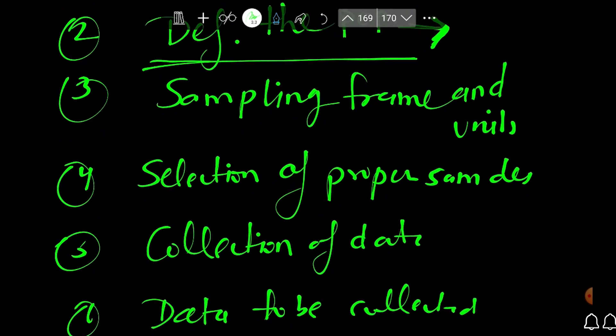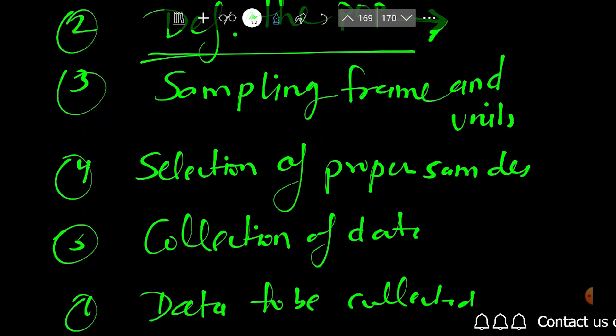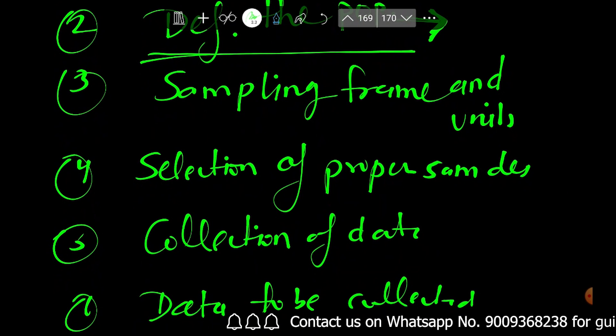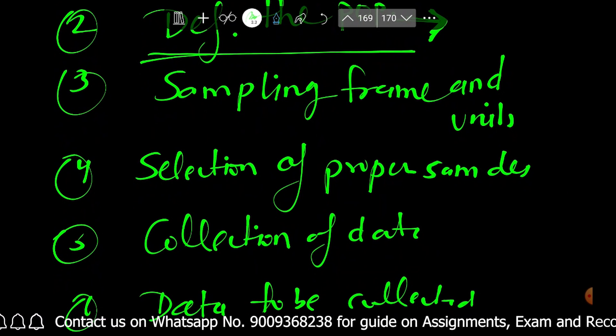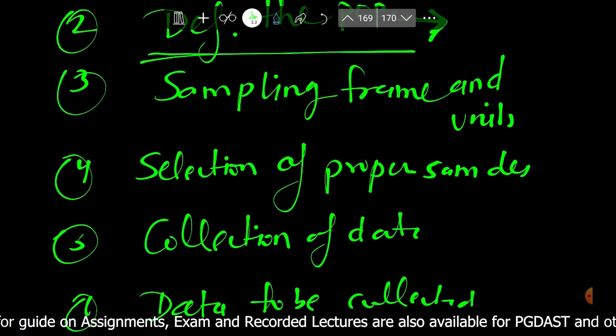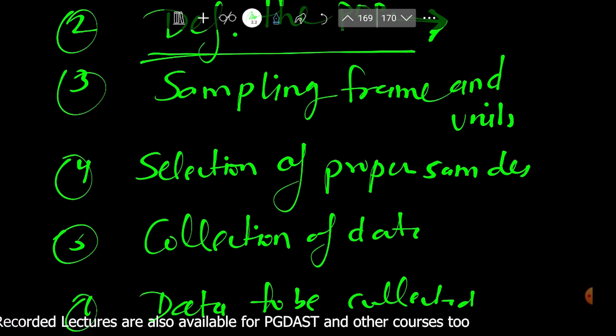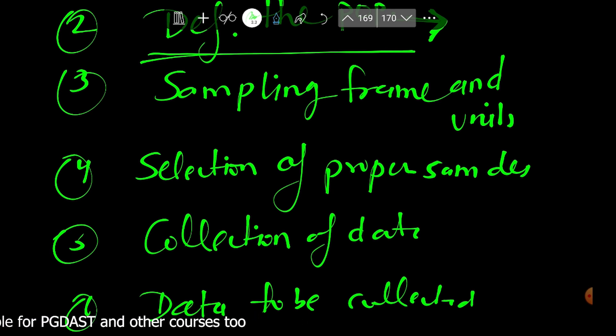The third step is the sampling frame and sampling units. The sampling unit is the ultimate unit to be sampled for the purpose of the survey. Sampling units must cover the entire population and must be distinct. The sampling frame is the ultimate frame covering all the information. It should not be overlapping, meaning the same population unit should not appear more than once.